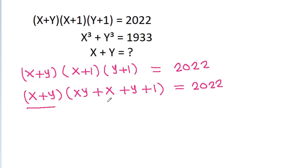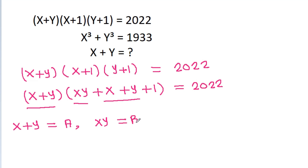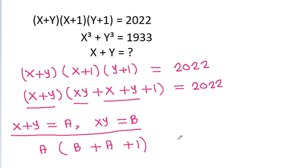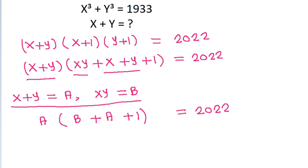We have x plus y and xy. If we take x plus y equal to a and xy equal to b, then a times b plus a plus 1 is equal to 2022. So ab plus a squared plus a is equal to 2022. This is equation 1.